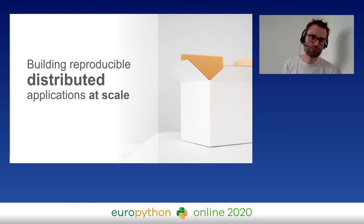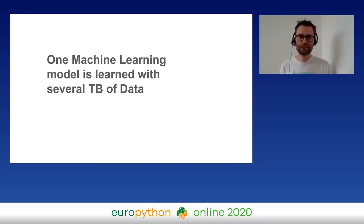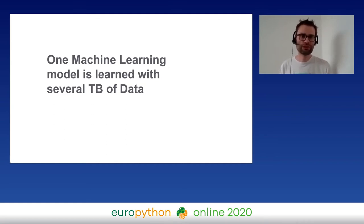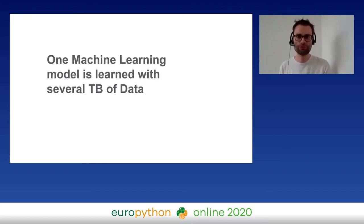Let's come back to the title: we want to build reproducible distributed applications at scale. One example from our use case: we do machine learning and one model is trained on several terabytes of data. When we use gradient descent and execute on 18 nodes it takes one hour; on one node it would take several days, which is not reasonable. For the logistic regression models we use, it's quite important to have an up-to-date model — it should be retrained every few hours, otherwise performance degrades quickly.